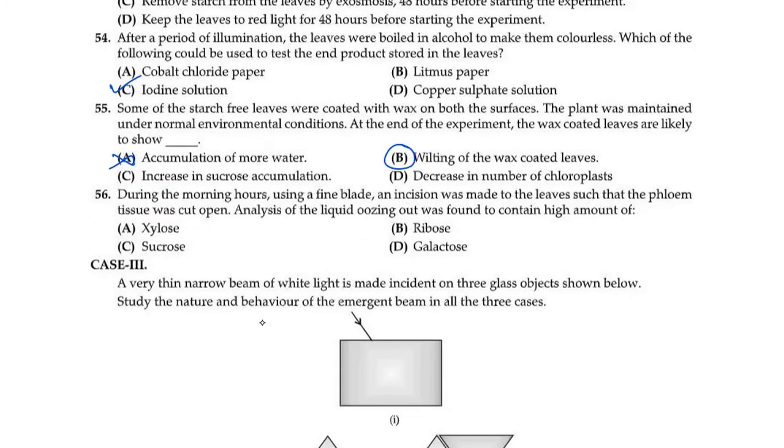Question 56: During the morning hours, using a fine blade, an incision was made to the leaves such that the phloem tissue was cut open. Phloem tissue has been cut. Analysis of the liquid oozing out was found to contain high amount of xylose, ribose, sucrose, or galactose. The correct option is sucrose.